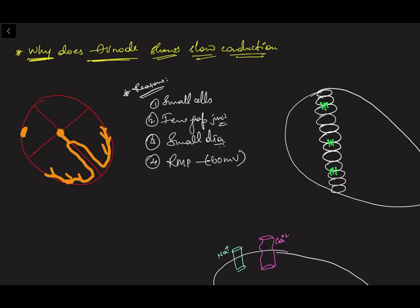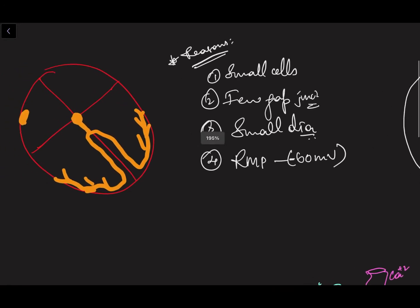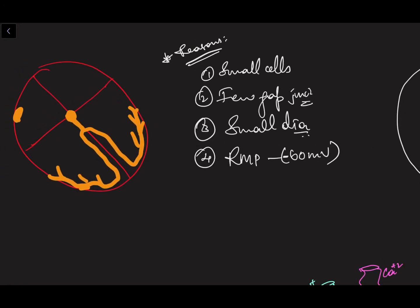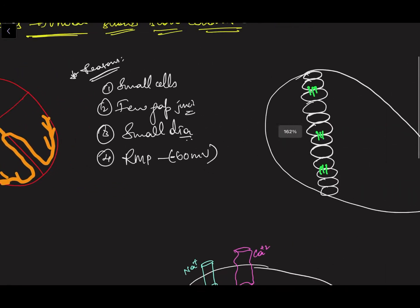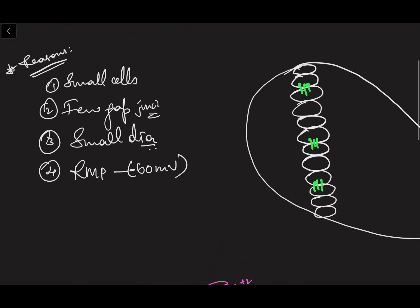Let's talk about why there is slow conduction at the AV node. If you know about the conduction system of the heart, you would have been aware of AV nodal delay — that's the delay of current flow at this point of the conduction system. So why does that actually happen? I've listed out a few reasons — let's check them out.